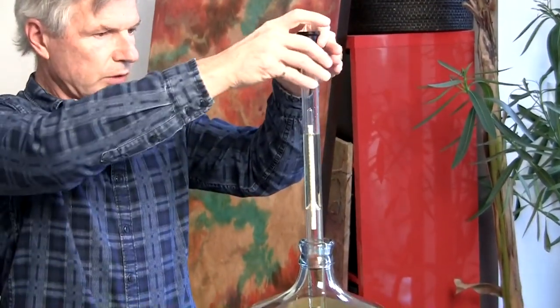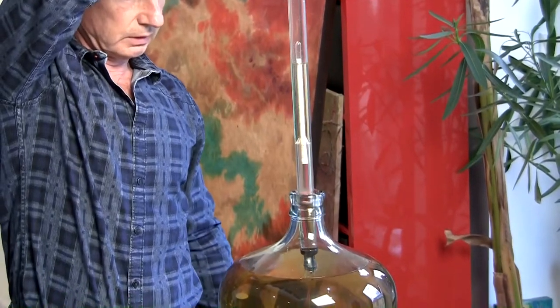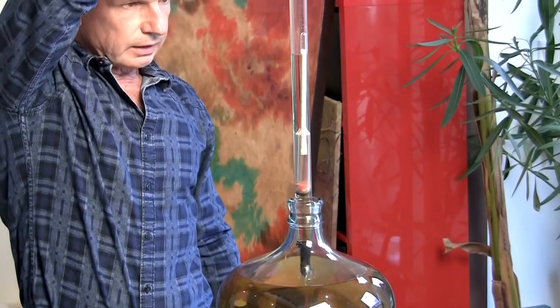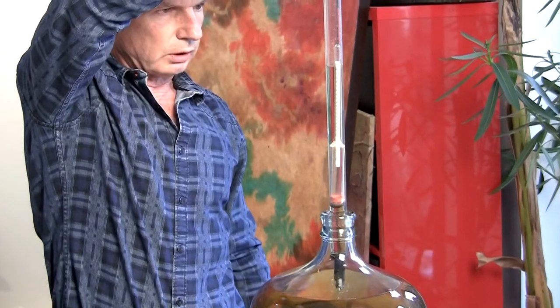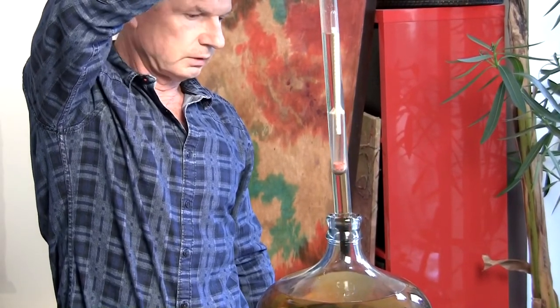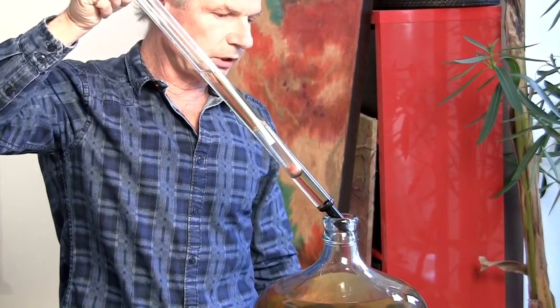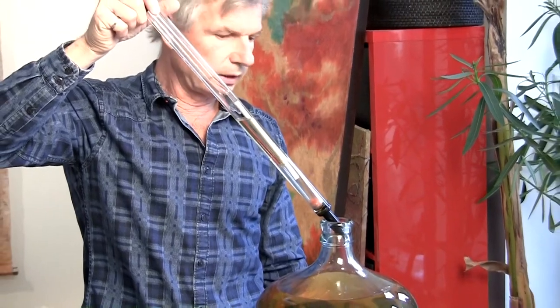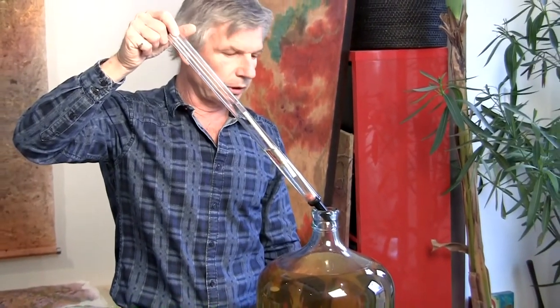Drop in your hydrometer, give it a twist and take a reading: .994. Perfect. Now you just touch the tip to the inside neck of the carboy to return the sample to where it belongs. It's fast and easy.